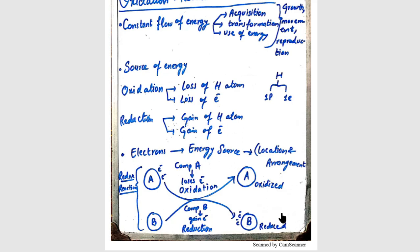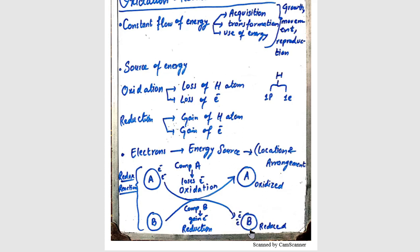Let's consider an example. Suppose Compound A has 2 electrons. What happens is that Compound A loses those 2 electrons — so Compound A is oxidized. This process is oxidation. Compound B, which had no electrons, now gains those 2 electrons — so Compound B is reduced. The gain of electrons is reduction.